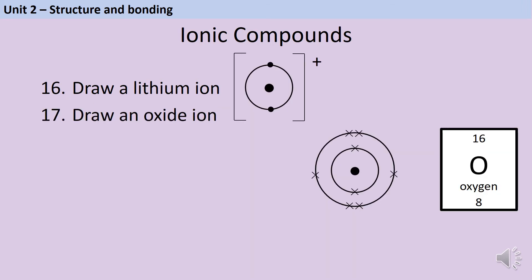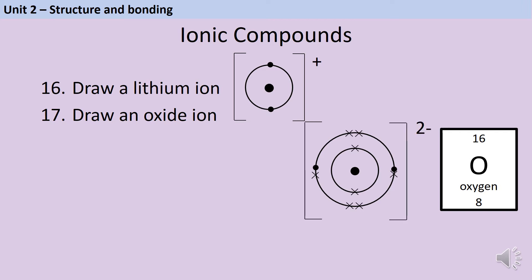To draw an oxide ion we go through the reverse process, because oxygen is a non-metal so it's going to gain electrons. Here's the oxygen atom, which has eight electrons because the atomic number of oxygen is eight. In order to get a full outer shell it needs to gain two electrons — and I also know this because oxygen is in group six. So it gains one electron and then a second electron, both donated from a metal. Then again we need square brackets to show that it's now a charged ion, and a two-minus charge because it's gained two negative electrons.